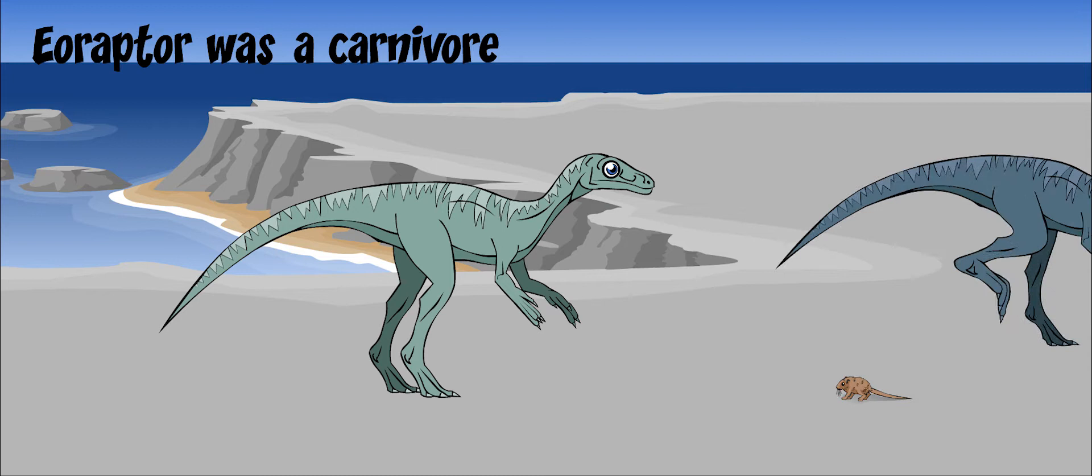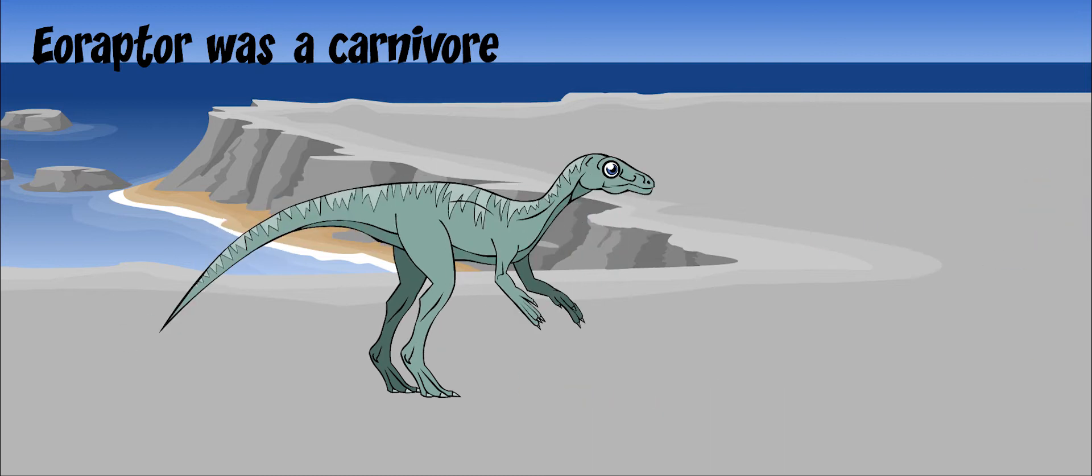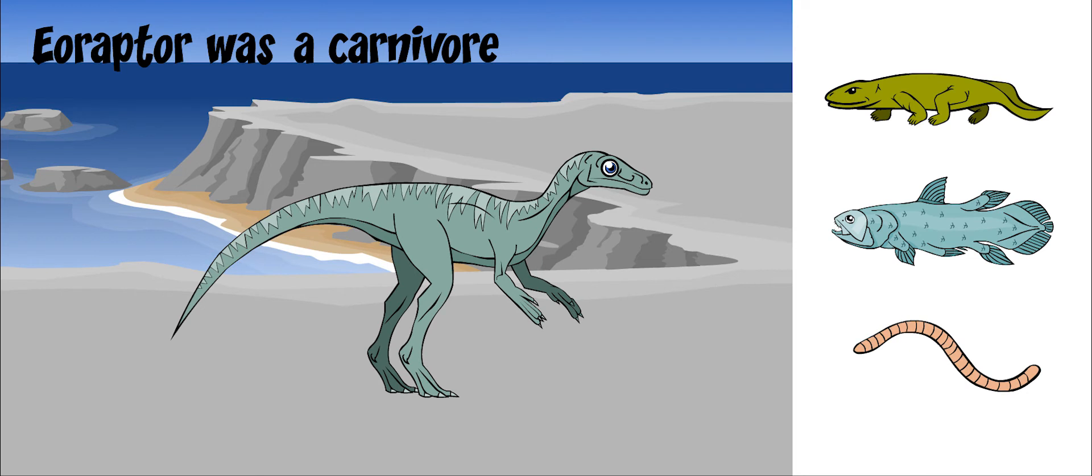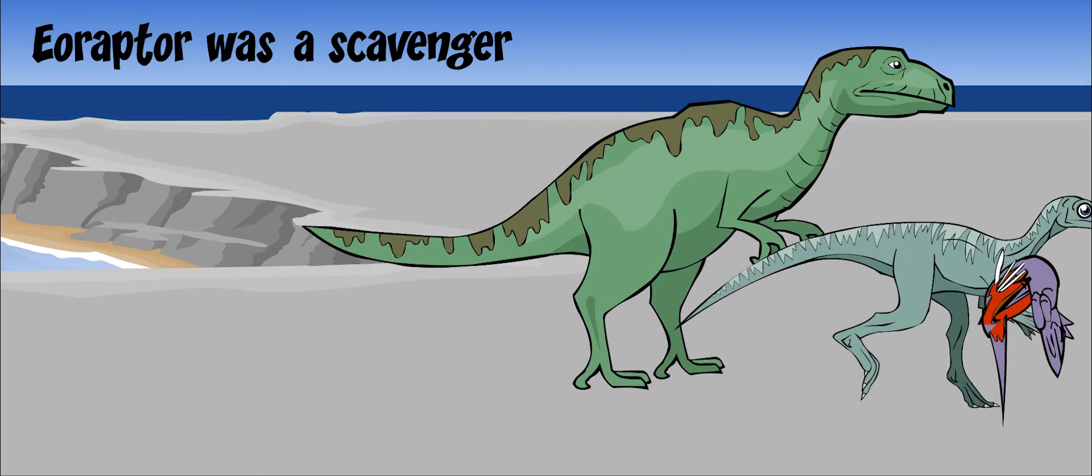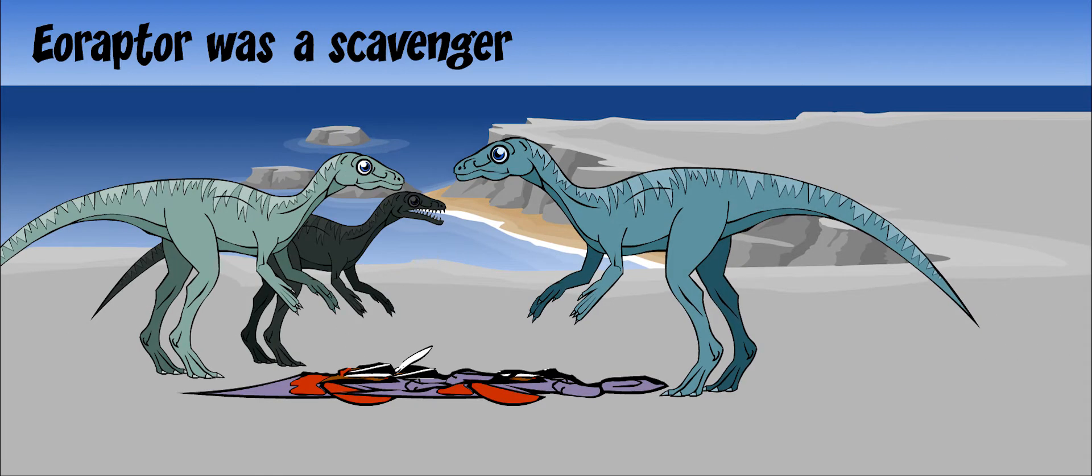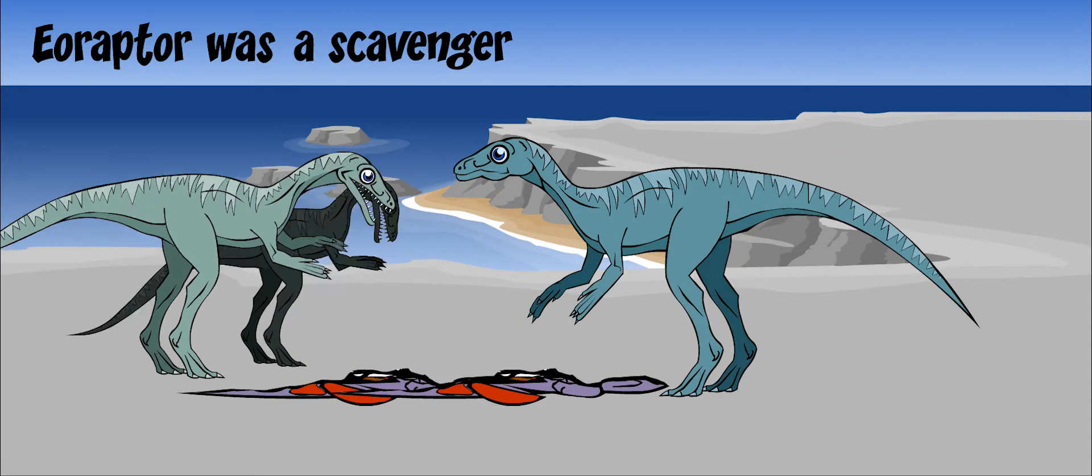Eoraptor was a carnivore, meaning that it ate meat. It probably ate lizards, and maybe even fish and worms. It was probably also a scavenger, meaning that it ate animals that were already dead. It would eat the leftovers from another dinosaur's meal.